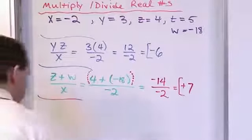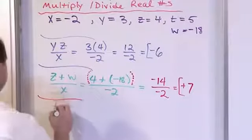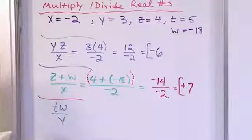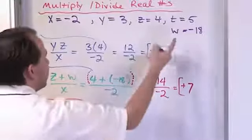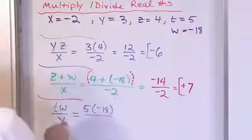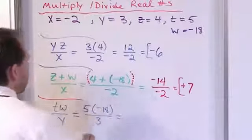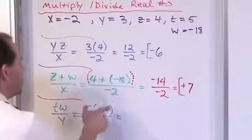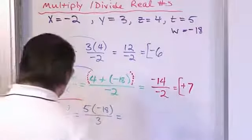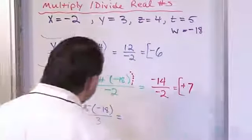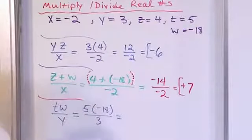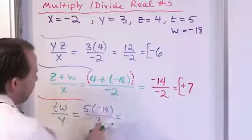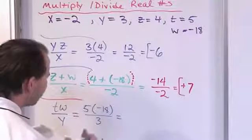Let's say we have t times w divided by y. t is 5, w is negative 18, divided by y which is 3. Something is going on at the top, so let's handle it. But there's a simpler way — instead of multiplying 5 times negative 18 first, we can simplify the fraction ahead of time by dividing top and bottom by 3. 3 divided by 3 is 1, and 18 divided by 3 is 6. Notice there's still a negative on the 6.